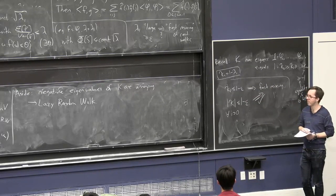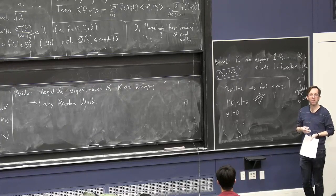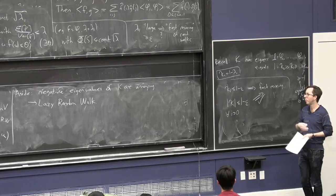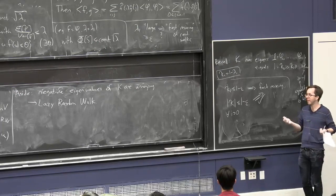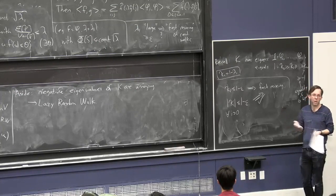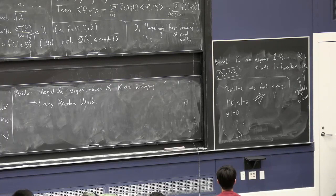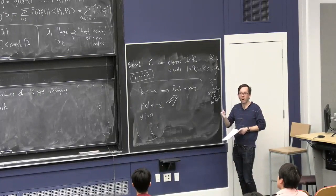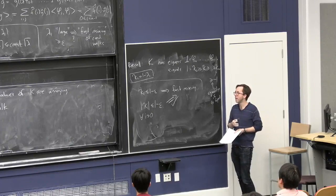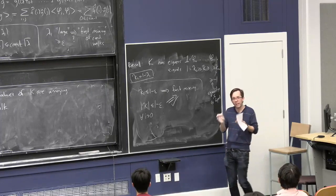The lazy random walk only affects the running time by a factor of two in expectation — what the standard random walk does in time T is comparable to what a lazy random walk does in time 2T, because half the steps are wasted. But it also breaks the stupid even-odd problem in bipartite graphs. Because you don't necessarily take an actual step each time, if you have a bipartite graph there's no problem — half the time you stand still, half the time you walk, so there's no more odd-even issue.